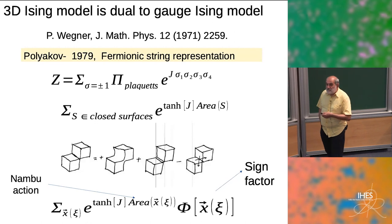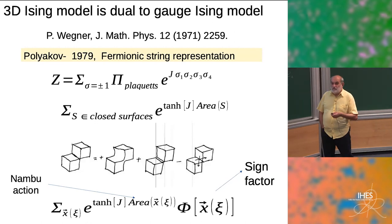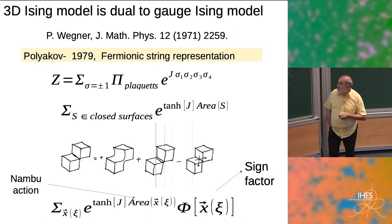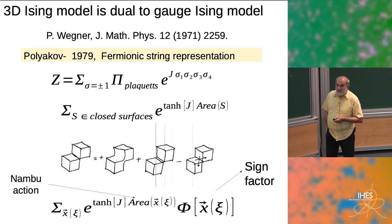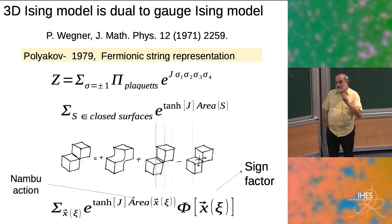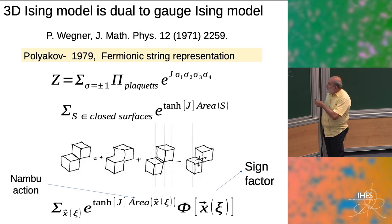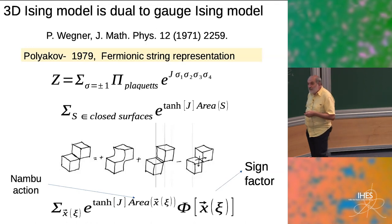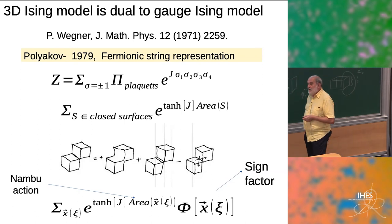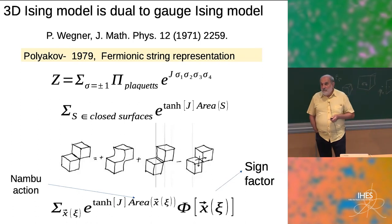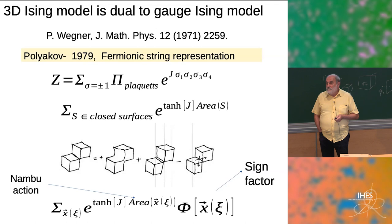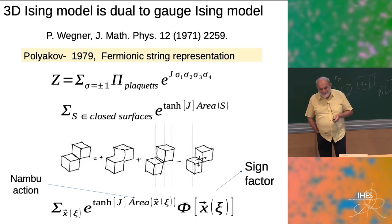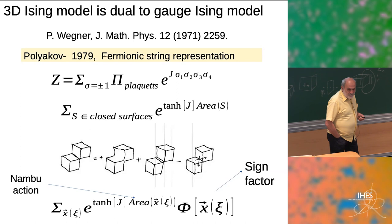This is precisely the same situation as in the Onsager solution of the two-dimensional Ising model, where you must put a sign — plus or minus — depending on the self-intersection of curves at that time. That's the Kac-Ward factor, also due to van der Waerden.